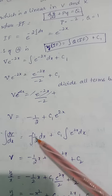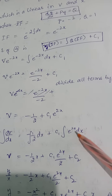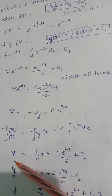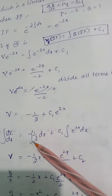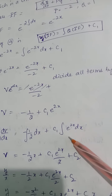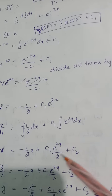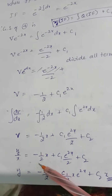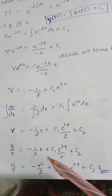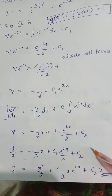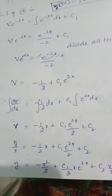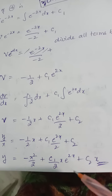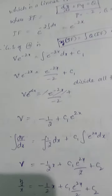Since V = dv/dx, integrating: v = ∫(-1/2) dx + c₁ ∫e^(2x) dx = -x/2 + c₁ · e^(2x)/2 + c₂. Since v = y/x, we have y/x = -x/2 + c₁e^(2x)/2 + c₂. Multiplying through by x gives the solution: y = -x²/2 + (c₁/2)x·e^(2x) + c₂x.